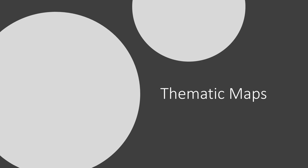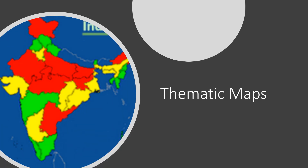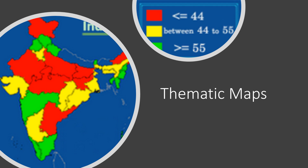Then what do thematic maps represent? They represent a theme or subject such as the literacy rate, rainfall, or population. In this example, you can see the literacy rates are given in different colors.